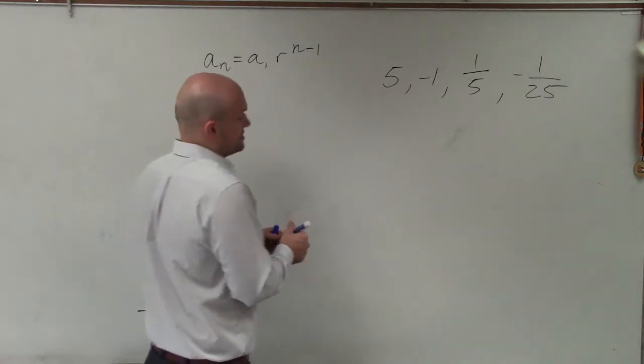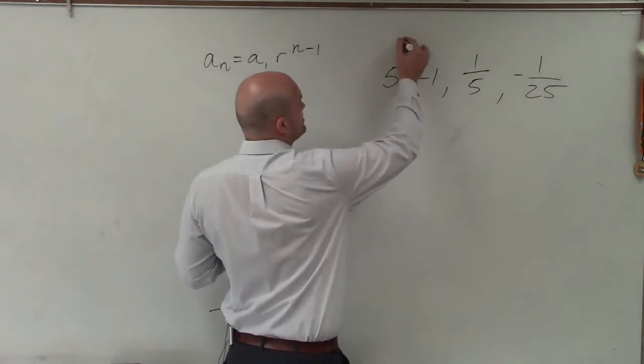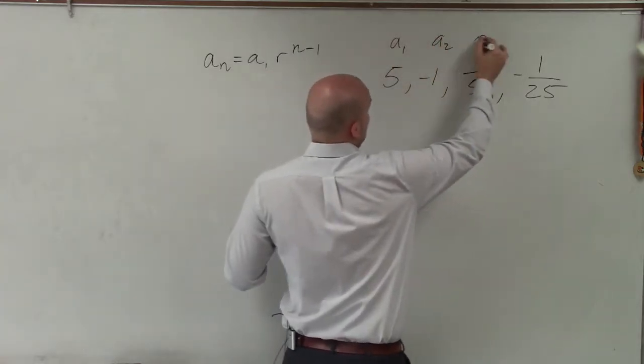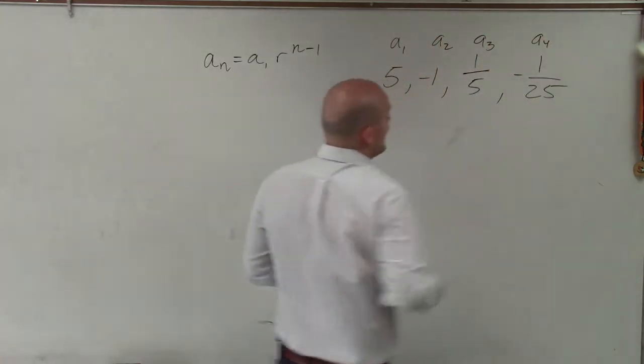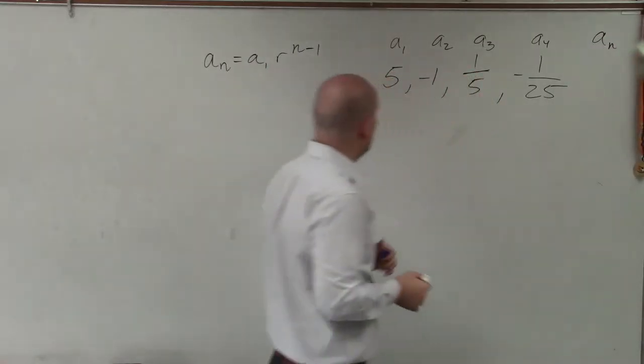So the first thing we can do is just kind of label them as where they label in the sequence. So this would be my first term, second term, third term, fourth term. And what we're trying to figure out is a rule for any term out in there.